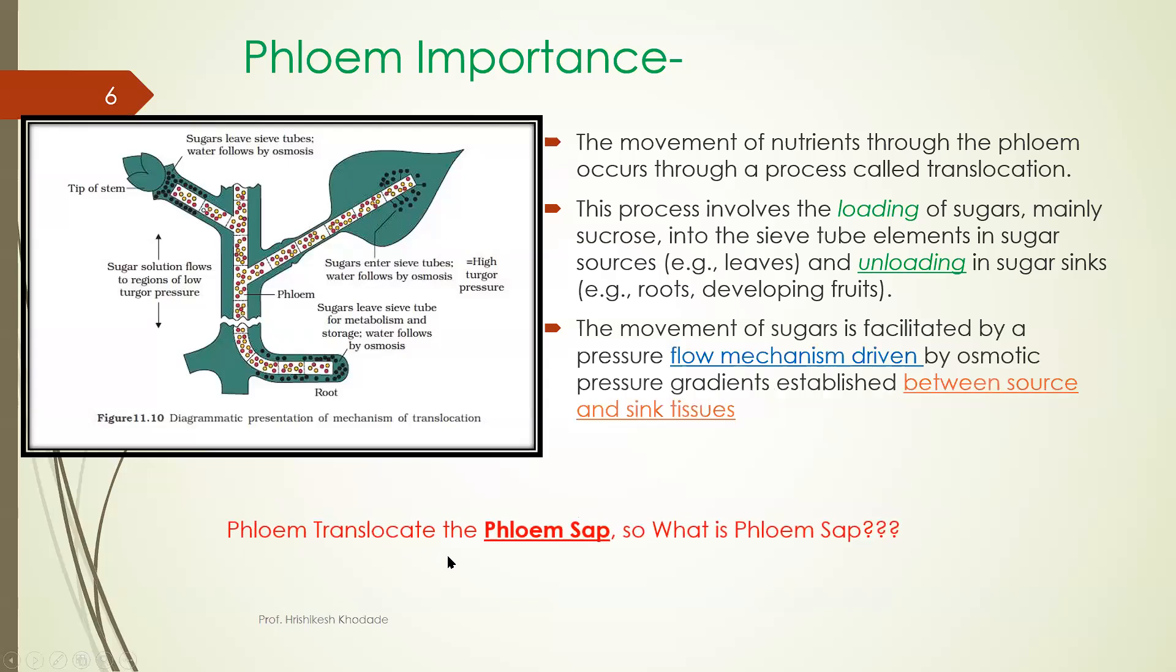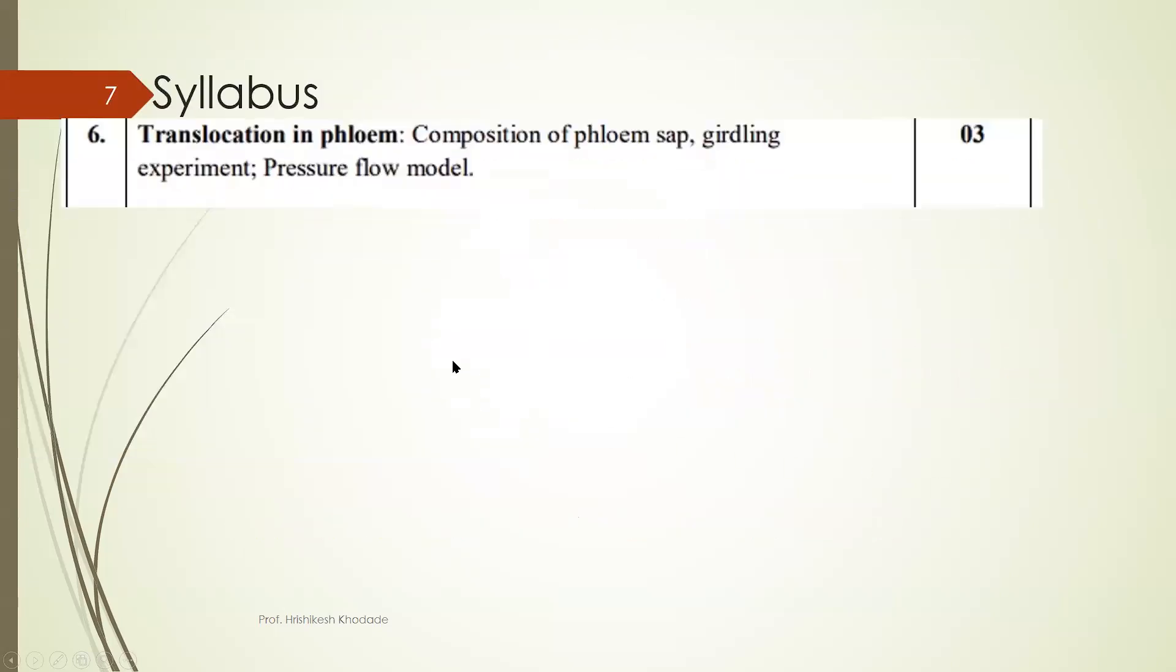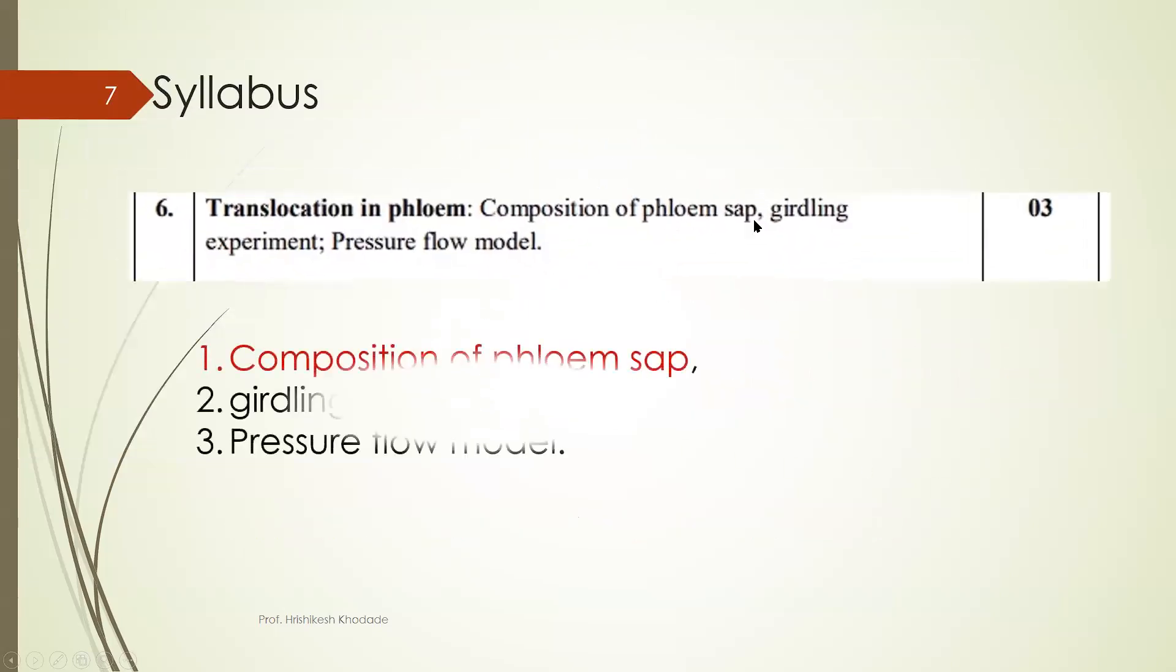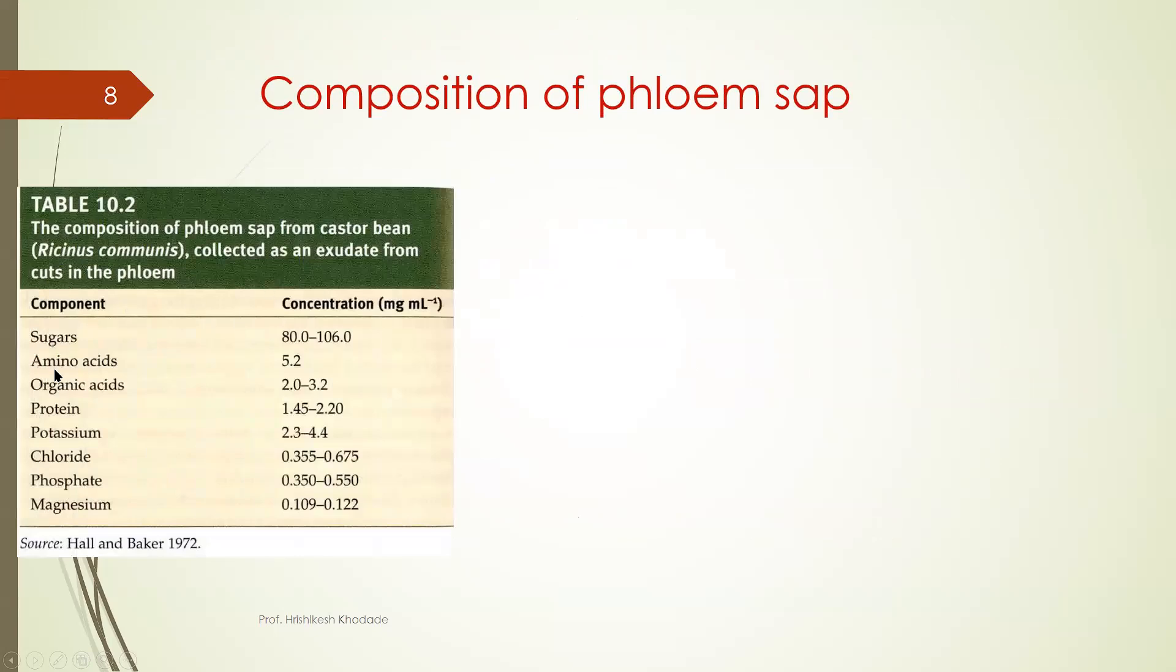So phloem translocation, the phloem sap. What do you mean by phloem sap first of all? As per your syllabus they have given word composition of phloem sap. So we will understand first what is phloem sap. The composition of phloem sap includes sugar, amino acid, organic acid,